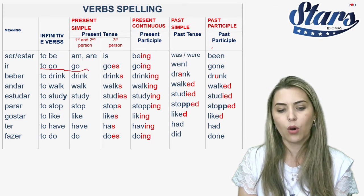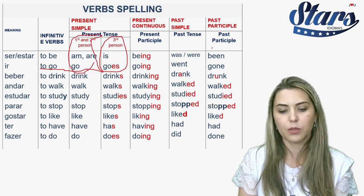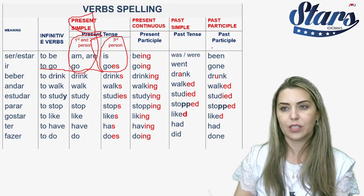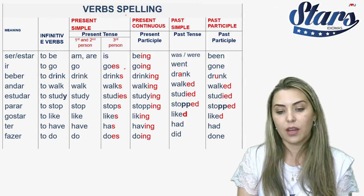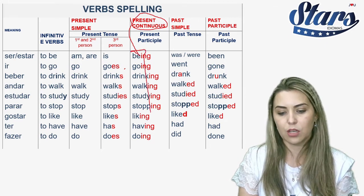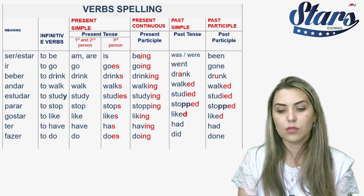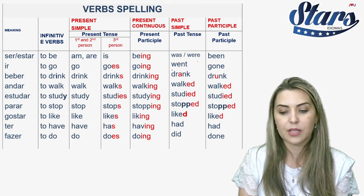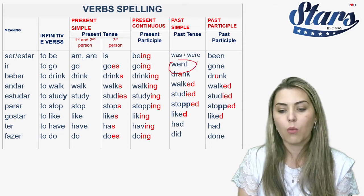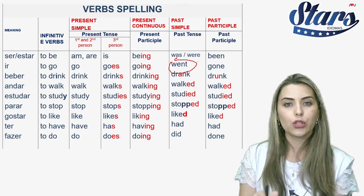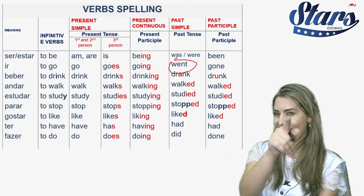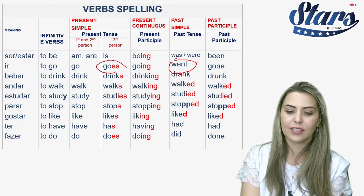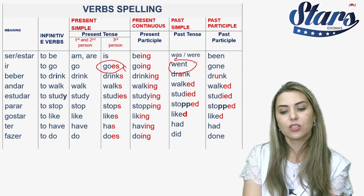Look at the verb 'go.' In the present simple it's 'go,' and 'goes' for the third person — he, she, it goes. You're going to improve your English and I'm going to learn how to deal with this board. In the present continuous, all verbs get 'ing.' In the past simple the verb changes — irregular verbs. For example, 'go' became 'went': I go, I went. She goes in present; she went in past.